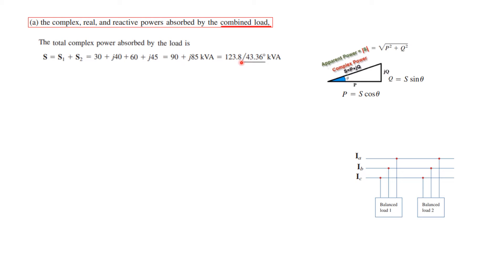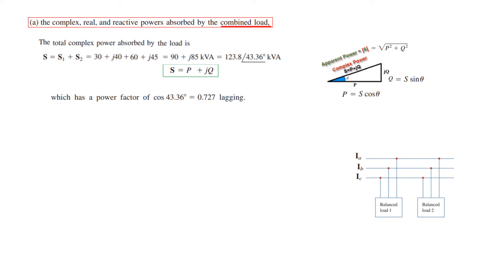We find the total complex power by adding the two: S_total = (30 + j40) + (60 + j45) = 90 + j85 kVA. We also write it in polar form because we need the angle. The power factor for the combined load is cos θ = 0.727 lagging. The total real power is P = 90 kW and total reactive power is Q = 85 kVAR.